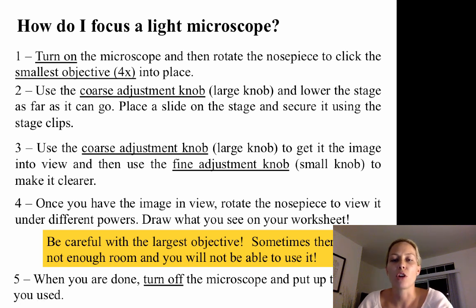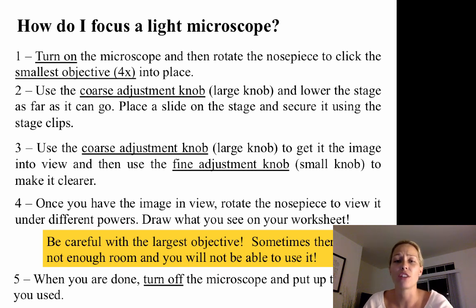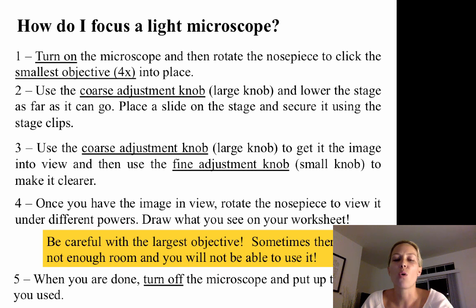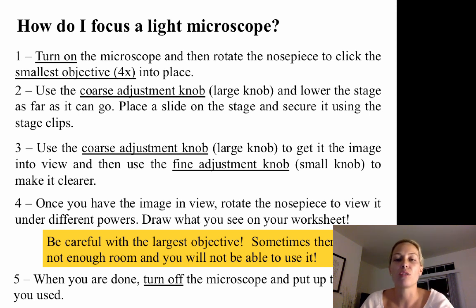How do you focus a light microscope? First, turn on the microscope. Then rotate the nosepiece and click it into the smallest objective, which should be the 4x. Use the coarse adjustment knob to lower the stage as far as it can go. Place the slide on the stage and secure it using the stage clips. Then rotate the coarse adjustment knob upward so the stage rises to meet the objective. Once the specimen is in focus, use the fine adjustment knob to make the image crystal clear and sharp.